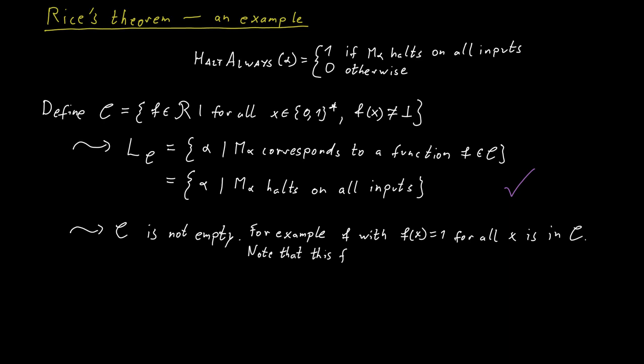And this function corresponds to a Turing machine that always accepts the input, always returns one, regardless of what the input is. We can easily build such a machine that just ignores the input and immediately accepts.